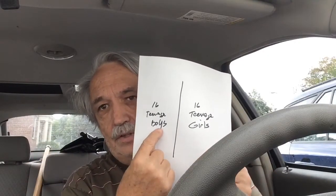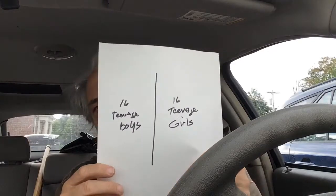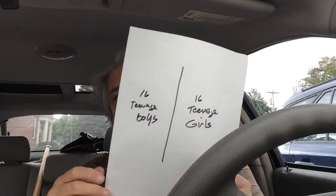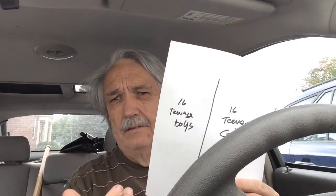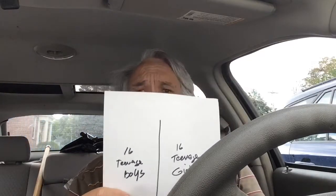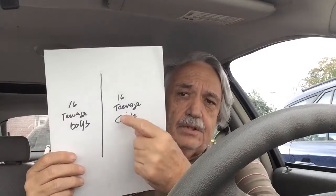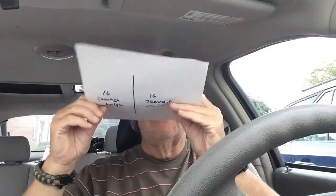We have 16 teenage boys and 16 teenage girls, and in between them we have a thin but flexible barrier. They can hear each other and they want to cross over, of course. So what the boys do is they push on the barrier. The girls notice they're pushing and say, what are you doing? We're trying to break this down, we're going to push on it. The girls say, let us give it a try, and they push on it. So what you have is this alternating system of pushing on that barrier.